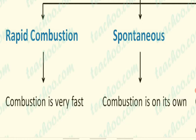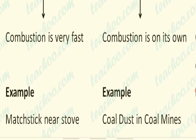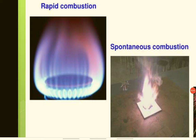Rapid combustion is a type of combustion that occurs very fast. Spontaneous combustion is a type of combustion which occurs on its own. Some examples of spontaneous combustion are coal dust in coal mines and forest fire. Some examples of rapid combustion are burning near a stove and burning of LPG.